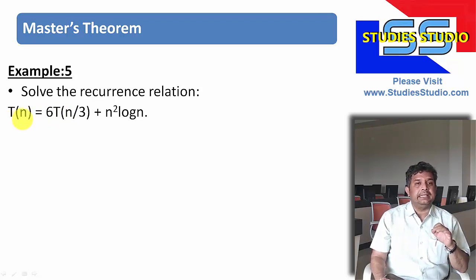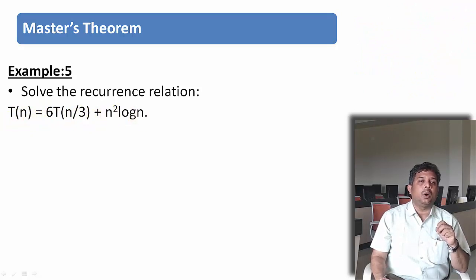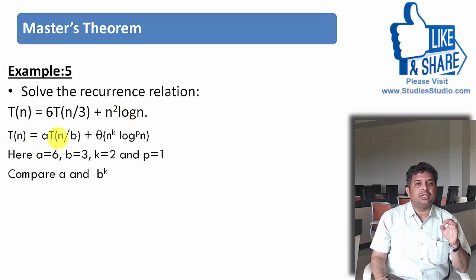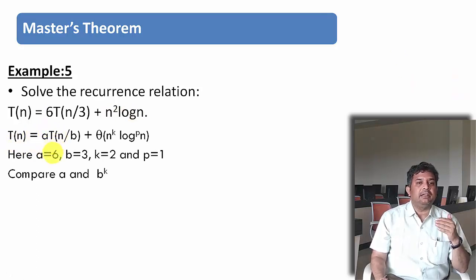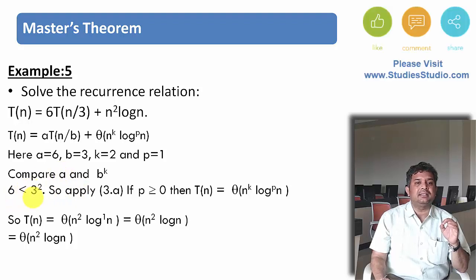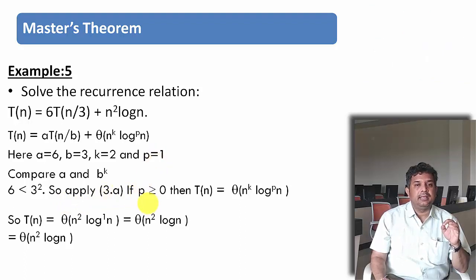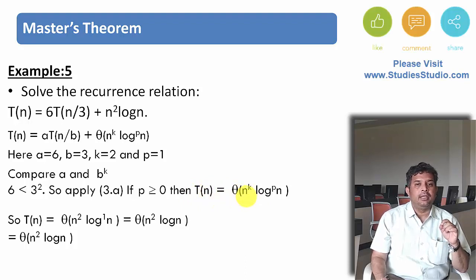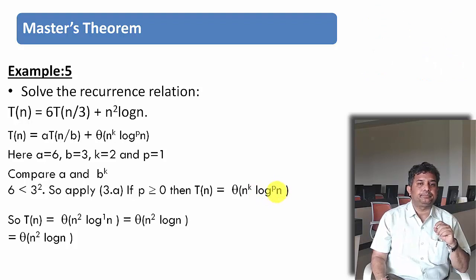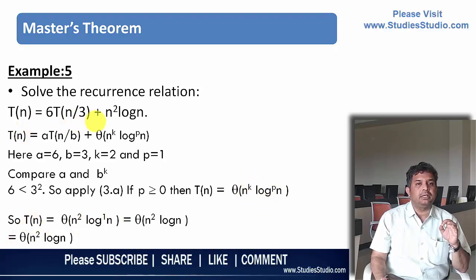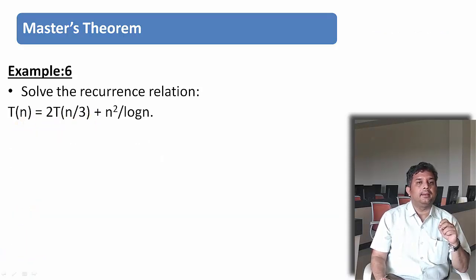The recurrence relation is T(n) = 6T(n/3) + n² log n. Comparing with the Master's Theorem formula: a = 6, b = 3, k = 2, and p = 1. Comparing a and b^k: 6 is less than 3² = 9, so we apply formula 3a. Since p = 1, which is greater than or equal to 0, we use T(n) = Θ(n^k · log^p n), substituting k = 2 and p = 1. The complexity of this recurrence relation is Θ(n² log n).